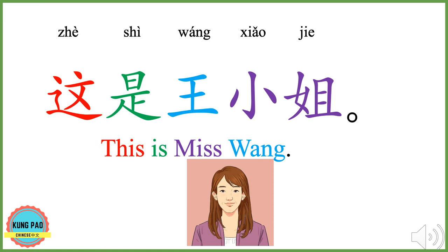这是王小姐。 这 means this. 是 means is. 王 is a very popular Chinese family name. 小姐 means miss. 这是王小姐 means this is Miss Wang. It's not difficult, right? Now you can try.